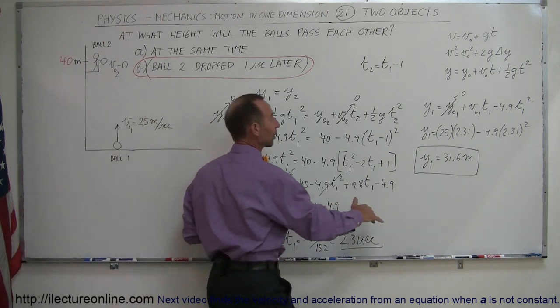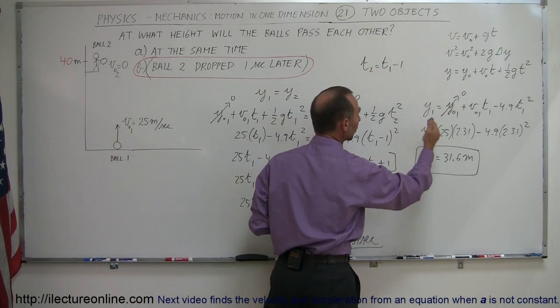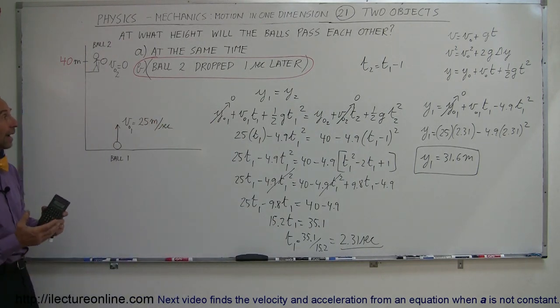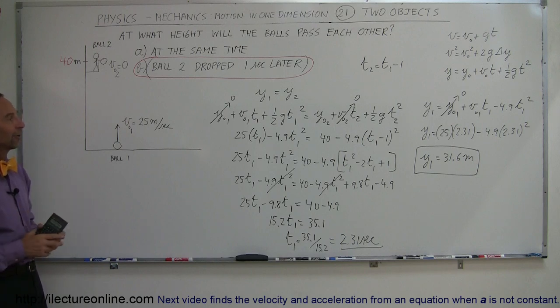Once you know the time, then you plug it back in the same equation, either one or the other equation, to find the height after that time. And that's how you find the height at which two balls cross, even if they're not thrown and dropped at the very same time.